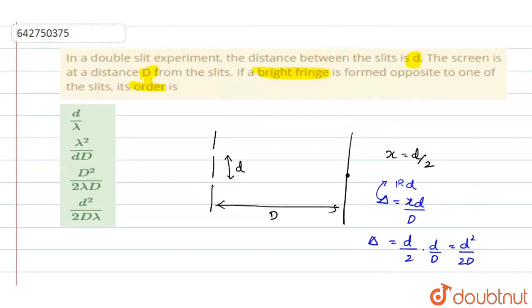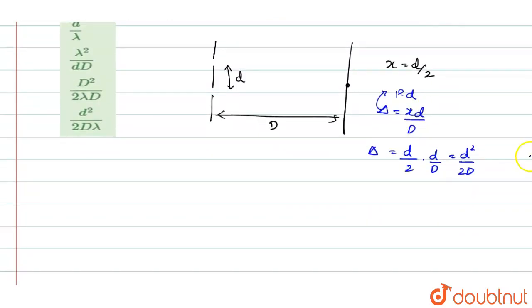Now, which type of fringe they are telling? See, they are telling it is a bright fringe. So, if you take it as an nth bright fringe, any nth bright fringe. So, for nth bright fringe,